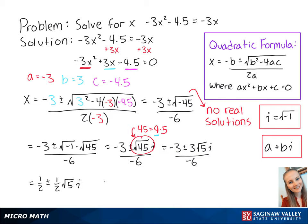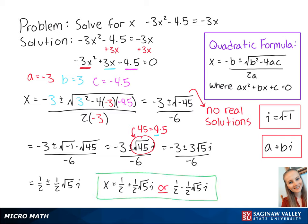So x equals 1 half plus 1 half times the square root of 5i, or 1 half minus 1 half times the square root of 5i. And this is the final answer.